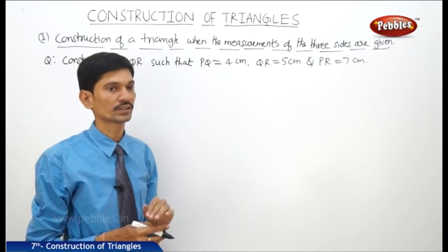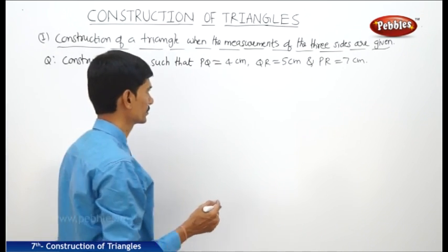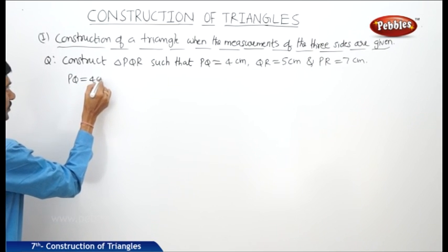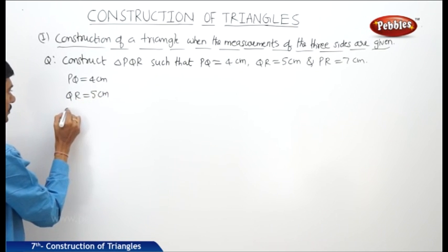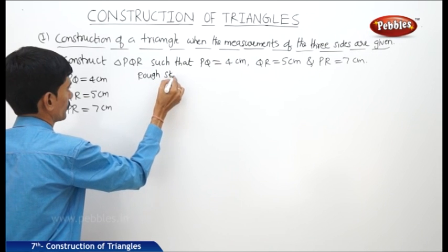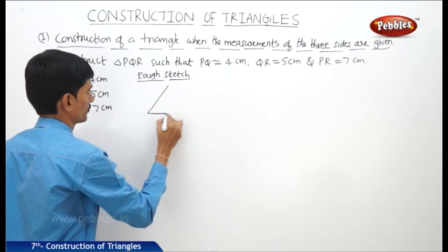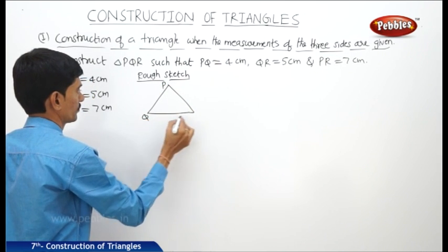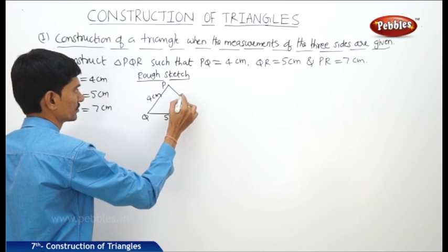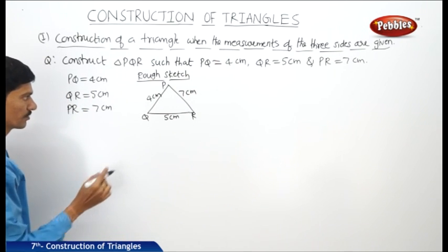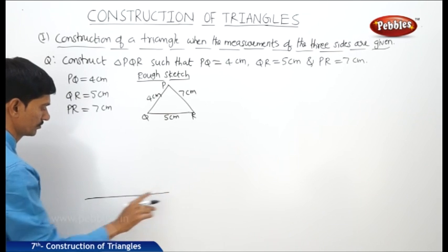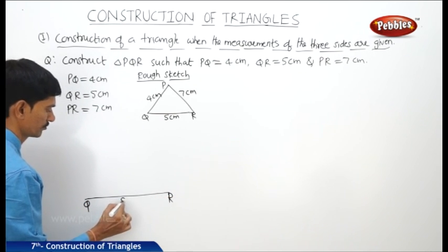Of the three sides, we can take any side as the base. First, let us draw the rough sketch of this construction. The three sides are given: PQ equals 4 centimeters, QR equals 5 centimeters, and PR equals 7 centimeters. PQ is 4 centimeters, QR is 5 centimeters, and PR is 7 centimeters. First, let us draw the base QR with 5 centimeters.